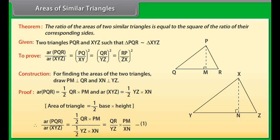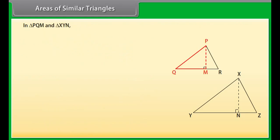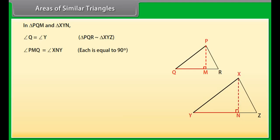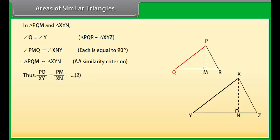In triangles PQM and XYN: angle Q equals angle Y because triangle PQR is similar to triangle XYZ, and angle PMQ equals angle XNY, each equal to 90 degrees. Therefore triangle PQM is similar to triangle XYN by AA similarity criterion. Thus PQ upon XY equals PM upon XN. Mark this as equation 2.